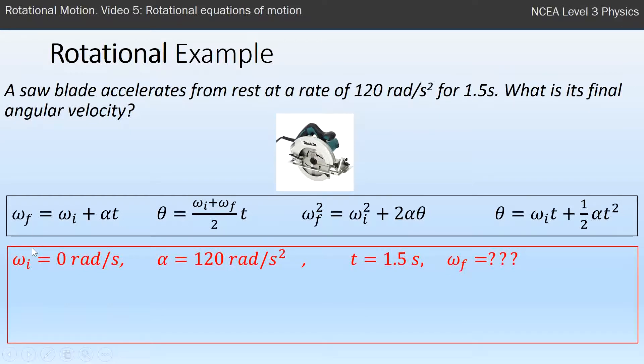Now I have to find a formula that has those four variables in it, and it turns out it's the first one here. Omega f equals omega i plus alpha t. Substitute in and work out my answer. I get 180 radians per second.